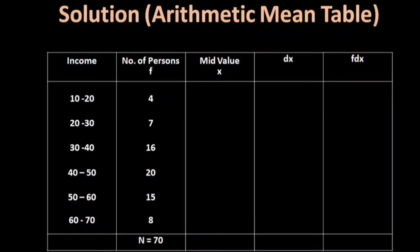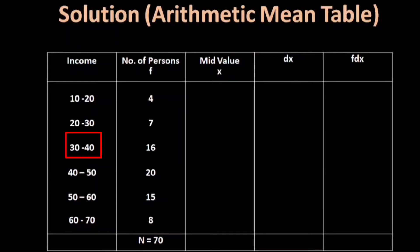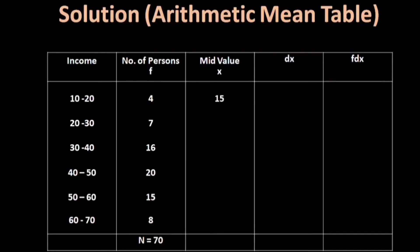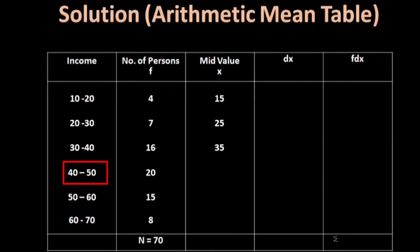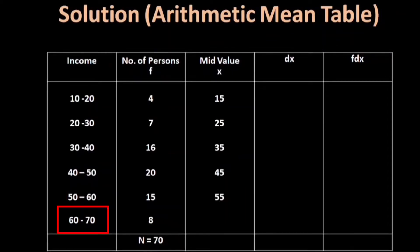The mid value is nothing but X. We calculate the mid value for each class: 10–20 gives 15, 20–30 gives 25, 30–40 gives 35, 40–50 gives 45, 50–60 gives 55, 60–70 gives 65.